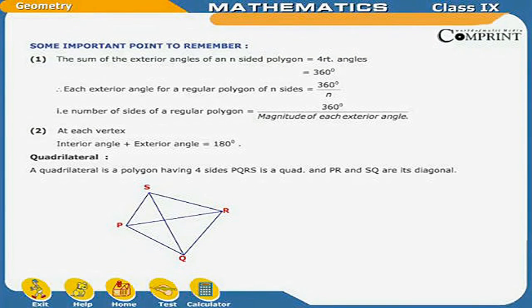Geometry. Some important points to be remembered. First, the sum of the exterior angles of an n-sided polygon is equal to 4 right angles, which is equal to 360 degrees.